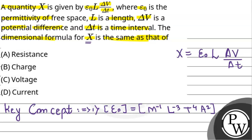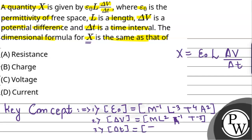Similarly, the dimensional formula of potential difference delta-V is M L² A⁻¹ T⁻³. And in the same way, the dimensional formula for time delta-t is simply T, because M is 0 and L is 0. So we will use these formulas going forward.